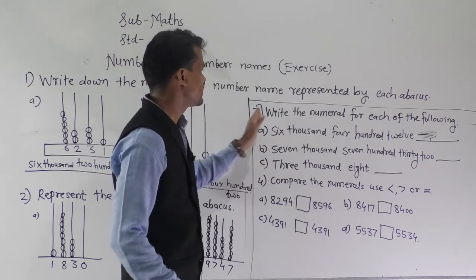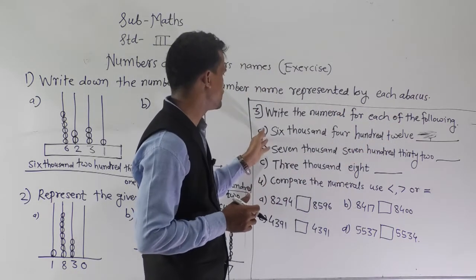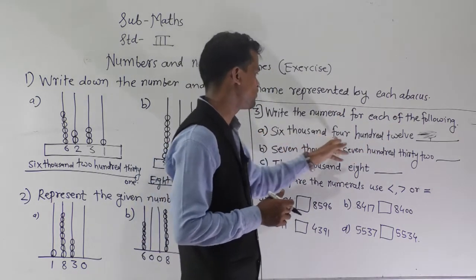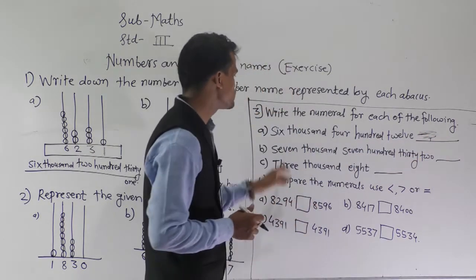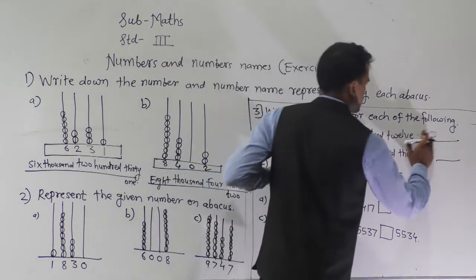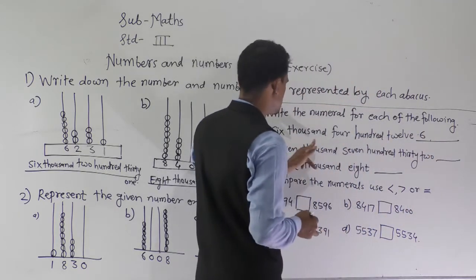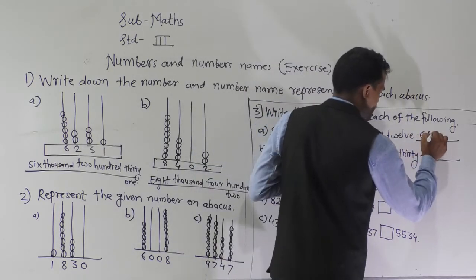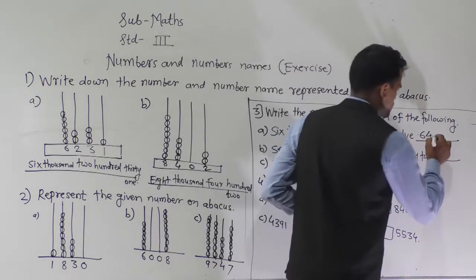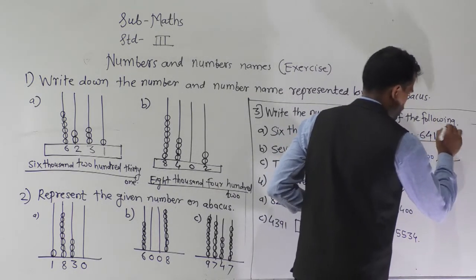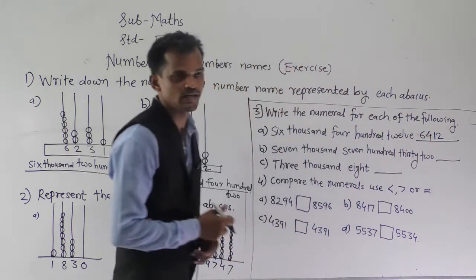Third question: write the numeral for each of the following. First number is 6412. Write 6 at the thousands place, 4 at the hundreds place, 1 at the tens place, and 2 at the ones place. So 6412 is written.